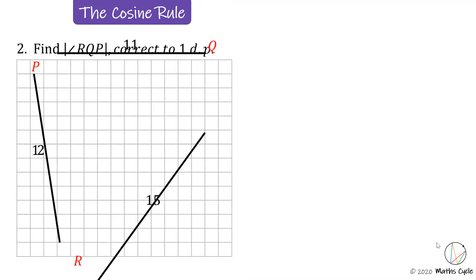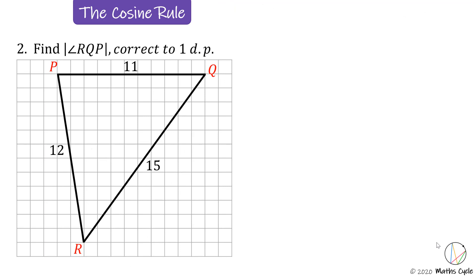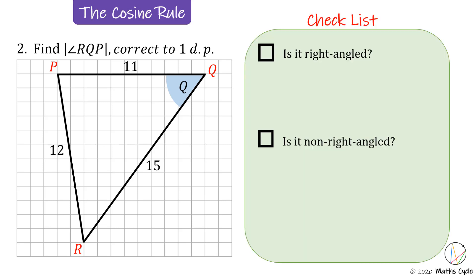Example two: find the measure of the angle OQP, correct to one decimal place. The angle OQP is always the one at the vertex in the middle, so it's the angle at Q — going from O to Q to P. Another way of labelling the angle at vertex Q is simply to call it angle Q, which we'll do for ease.